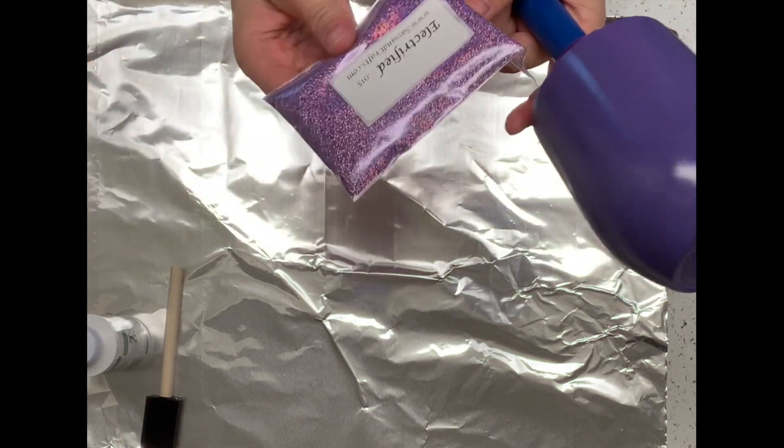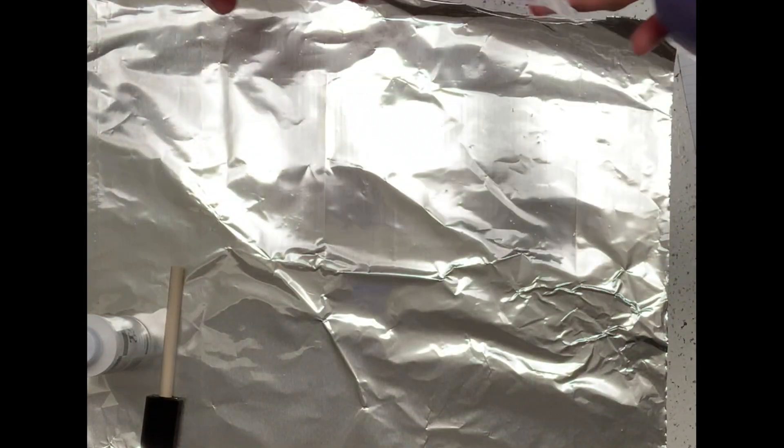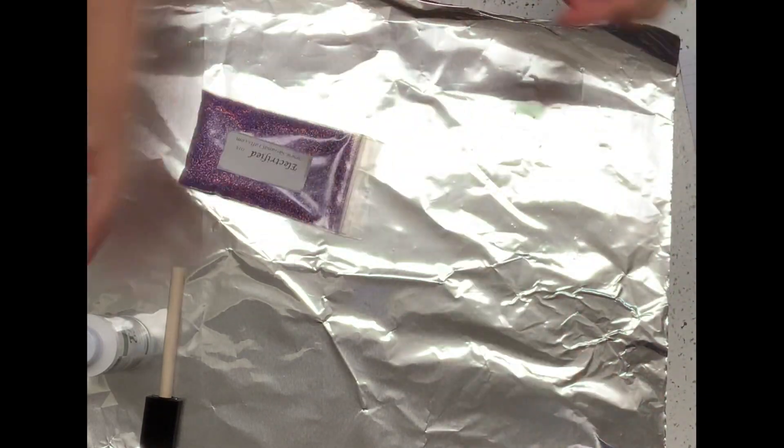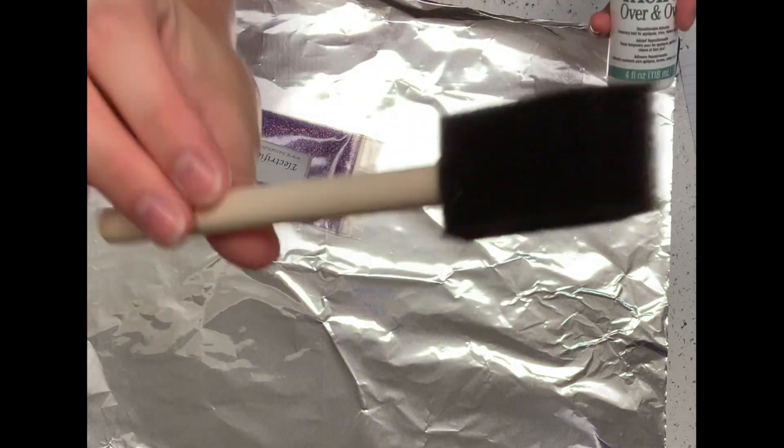I already prepped the base and I'm going to use Electrified by Sasson Crafts. You'll also need the Tack-It over and over glue and a foam brush.